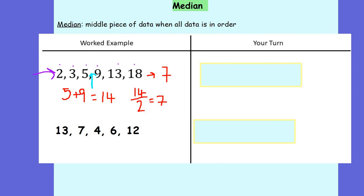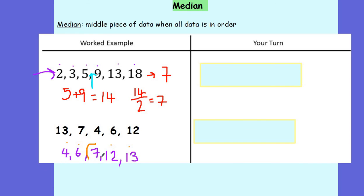I'll do another example. This time I've got 5 numbers and that's going to make my life a bit easier. I start by putting them in order: 4, 6, 7, 12, and then 13. I then want to find the middle piece of data, so I count from each end — 1, 2, and 3. The middle piece of data is already in the data — it's 7. So the median for these numbers is just 7. I don't need to find the midpoint between two numbers because I've got an odd number of data, so my middle number is already within the data.